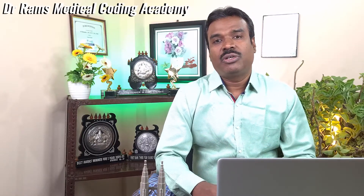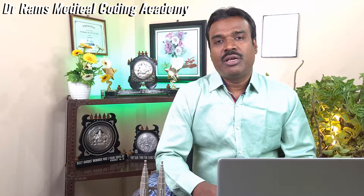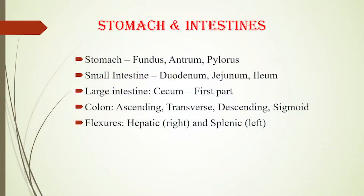The pylorus continues as the small intestine — more specifically the duodenum. The duodenum is technically the first part of the small intestine, which continues as the jejunum and later becomes the ileum. So we have the duodenum, jejunum, and ileum as parts of the small intestine.